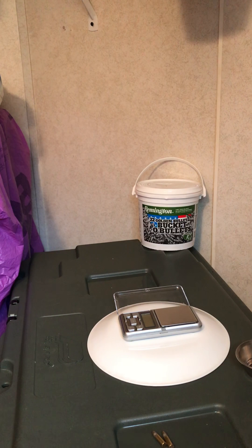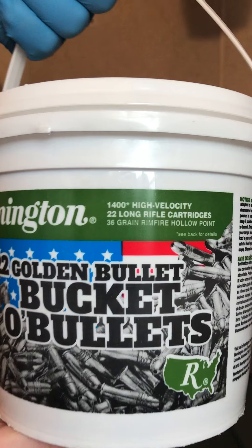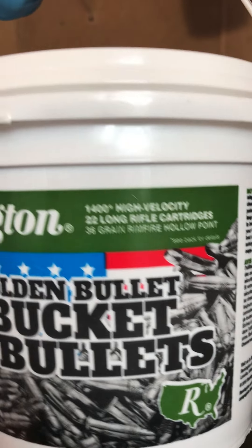Thanks for tuning in. Today we're going to take an up-close look at the 22LR golden bullet from Remington. This is where I got them from - this is a 36 grain plated hollow point.